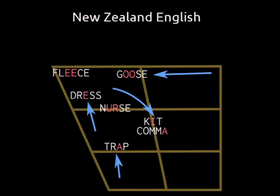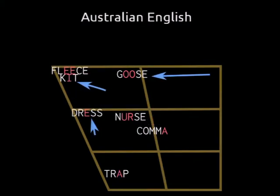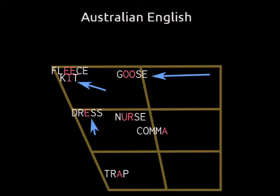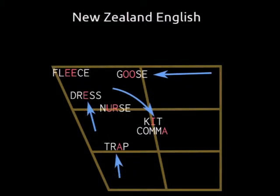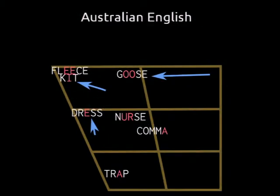And this is what New Zealand English has. A lot of sounds have gone towards the front of the mouth — there's a lot of pressure on the top front of your mouth. The kit sound has sort of jumped down to where the nurse was, and merged with the comma sound. And in Australia a similar shift happened, but their kit didn't race away — it just went up and pushed the fleece. That's why Australians can't say 'fish and chips' the same as us.